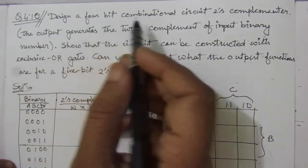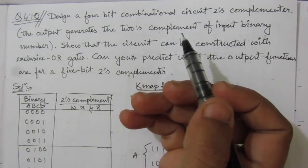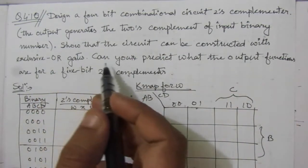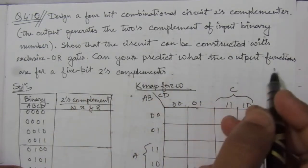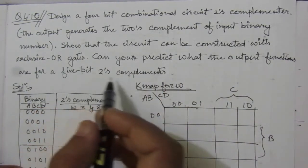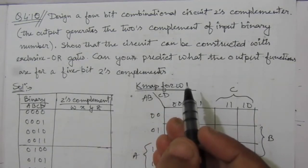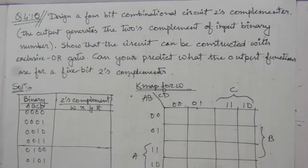We have to design a combinational circuit that will find out the two's complement of a given 4-bit binary number. Then we have to show that the circuit can be constructed with exclusive-OR gates — that means we have to express the circuit in terms of the XOR operation. Then we are asked to predict what the output functions are for a 5-bit two's complementer, so we just need to find out the 5-bit expression, since we will already have the 4-bit expression.